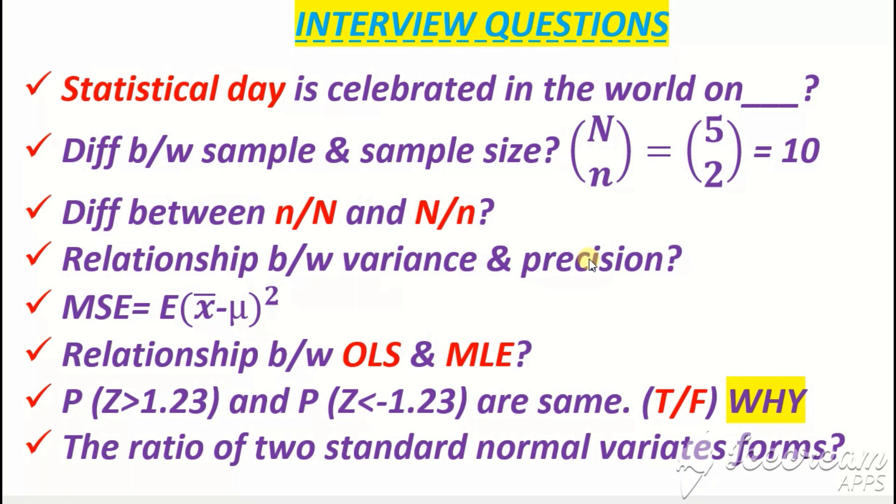What is expected value of square of (x̄ - μ)²? This difference - the square difference between estimator and parameter - is called Mean Square Error (MSE).